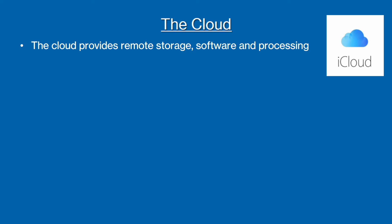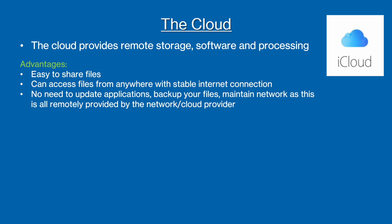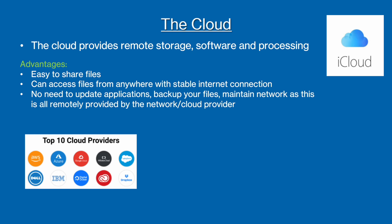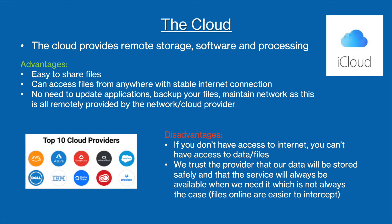Next, let's talk about the cloud. The cloud provides remote storage, software, and processing. It has many advantages: it is easy to share files, and the files can be accessed from anywhere with a stable internet connection. It is also useful as there is no need to update or backup applications or maintain the system, as your cloud provider will take care of all of that for you. This is especially useful for a company or organisation, as they do not need to hire someone to manage the network, which saves money. However, if you don't have access to the internet, you can't access your files. Also, you are trusting the company to safely store your data, which is not always the case, especially since data stored online is easier to intercept.